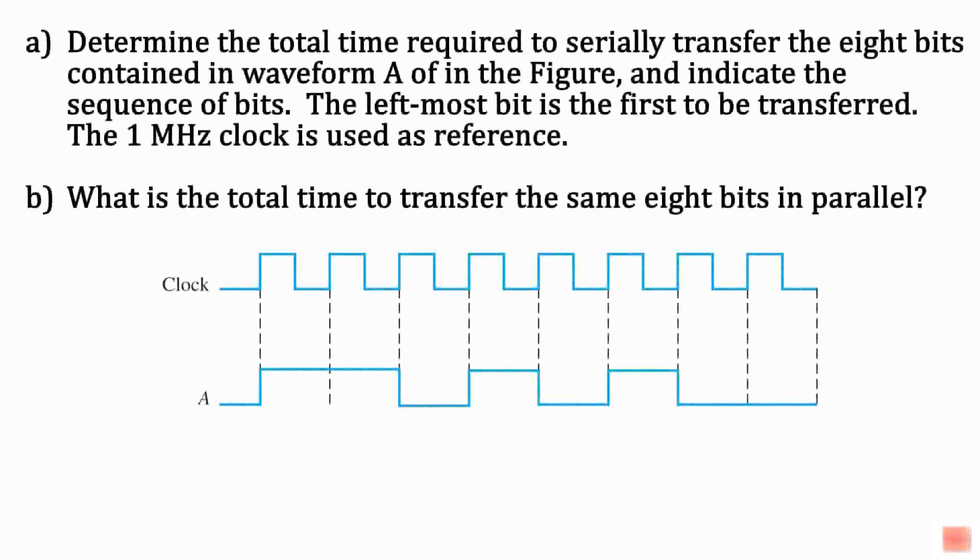Now let's look at an example. We have a digital waveform that represents the clock, and one that represents our data. The clock has a frequency of 1 MHz. First, what is the data bit sequence? Second, how long does it take to serially transfer the 8 bits of data? And third, how long does it take to transfer the same 8 bits of data in parallel?